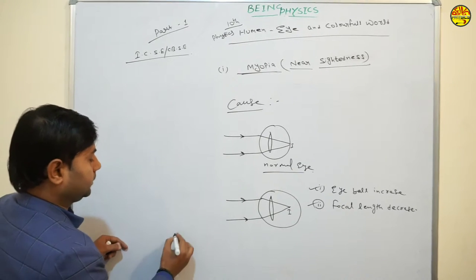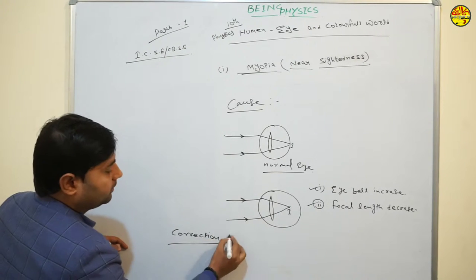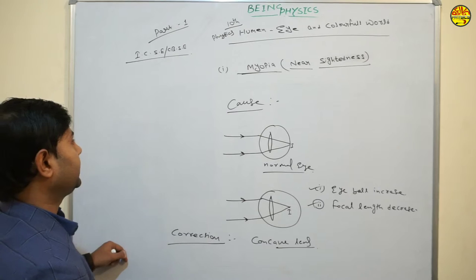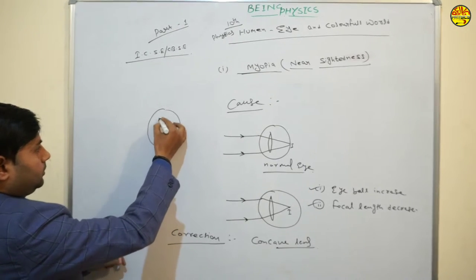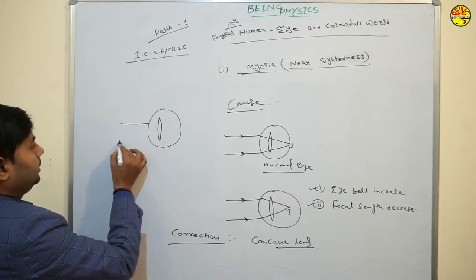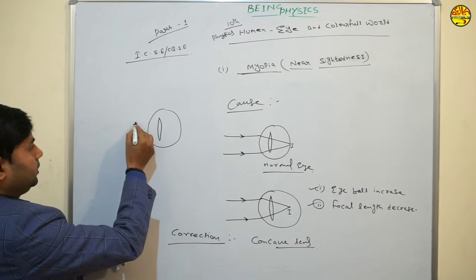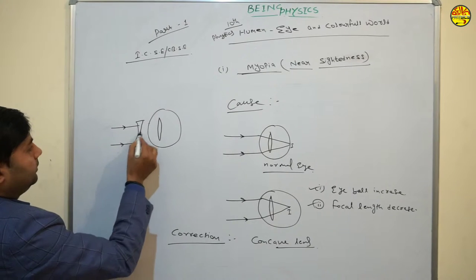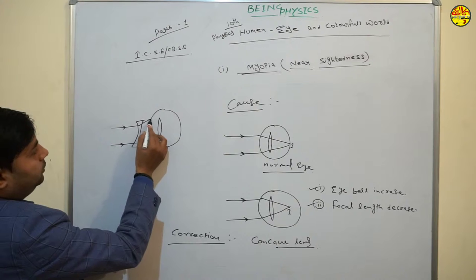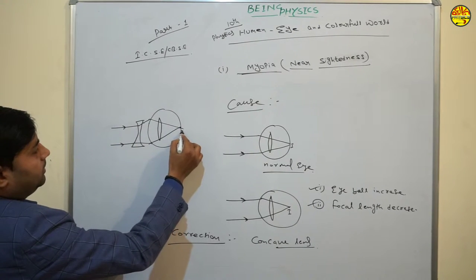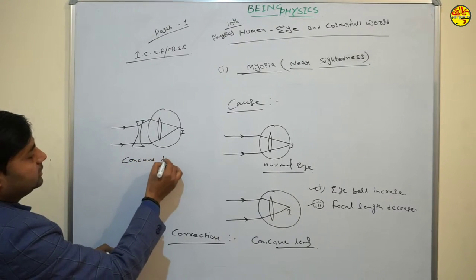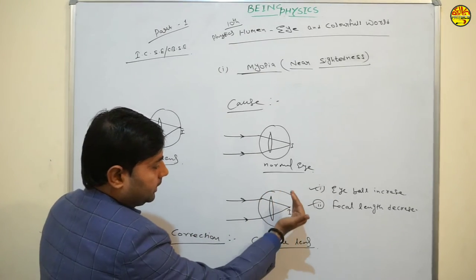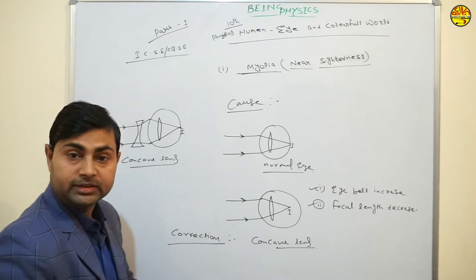If you want to correct myopia, the correction is a concave lens. Using a concave lens, the light beam diverges first and then converges properly on the retina. So the corrected eye uses a concave lens. In myopia, the eyeball is elongated and the retina is pushed back — this is why the image forms in front of the retina. The concave lens corrects this.